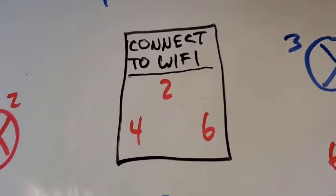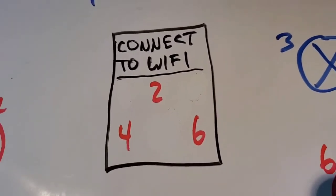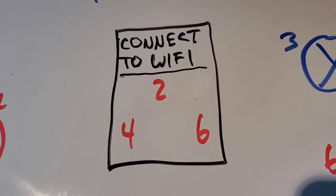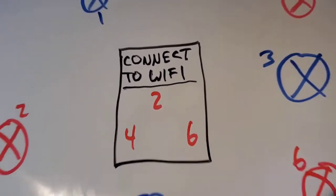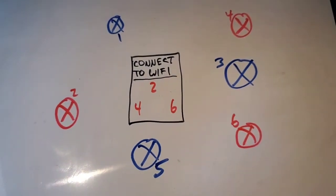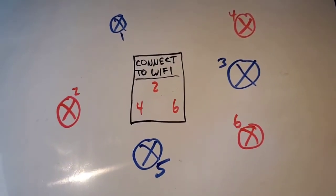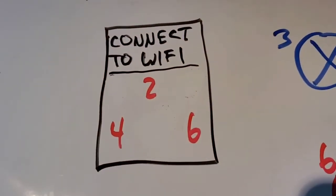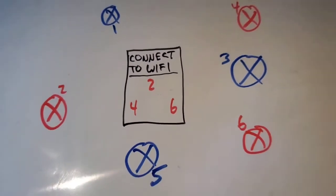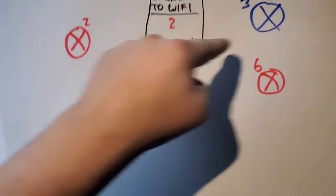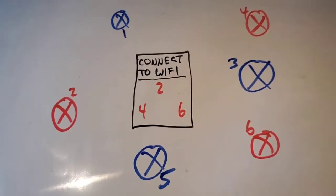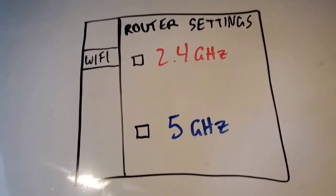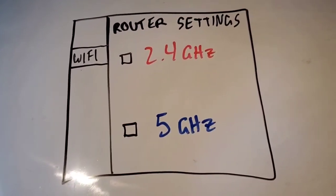If you have an older device that doesn't support 5 gigahertz networks, you'll only see the 2.4 gigahertz ones. Even if you have many routers and networks around you, if your device only supports 2.4 gigahertz, it won't even see the 5 gigahertz routers — they won't appear on the list at all.